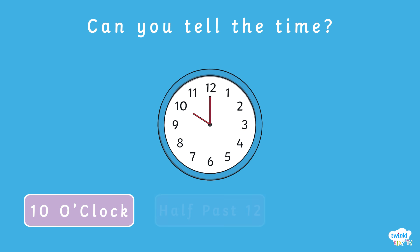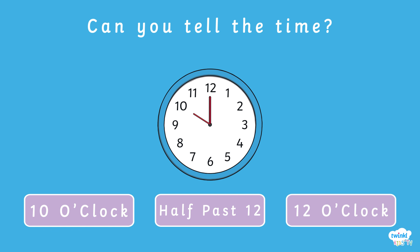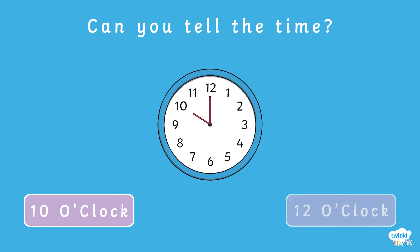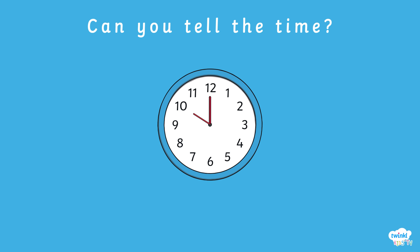Is it 10 o'clock, half past 12, or is it 12 o'clock? It's not half past 12. Hint! Look at where the minute hand is pointing. It's 10 o'clock. The big hand is pointing at 12, so we say o'clock and put it after the number that the small hand is pointing to, which is 10. That means it's 10 o'clock.